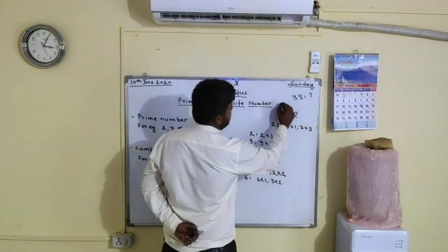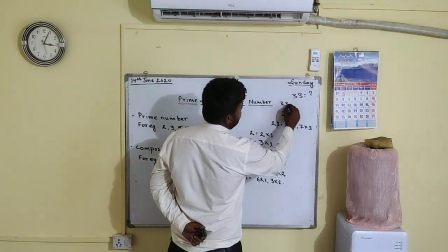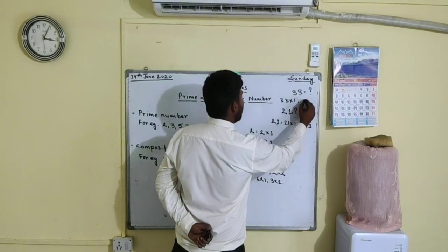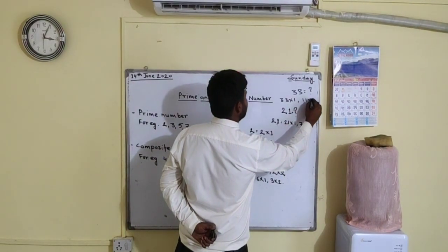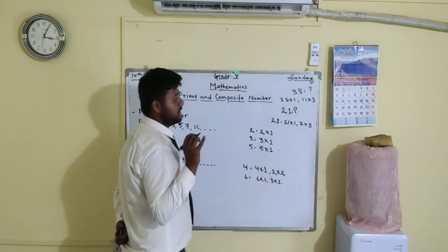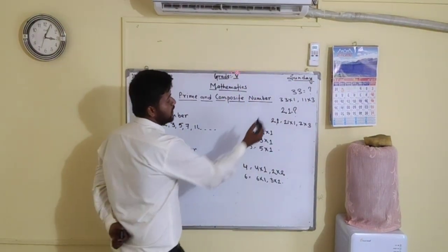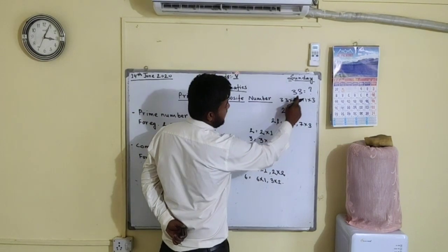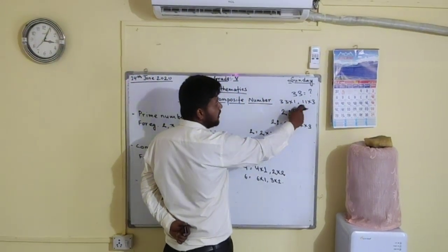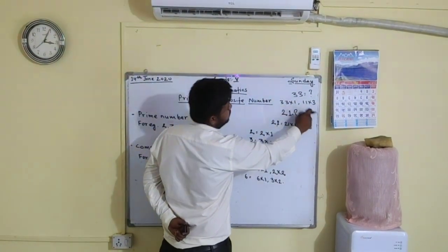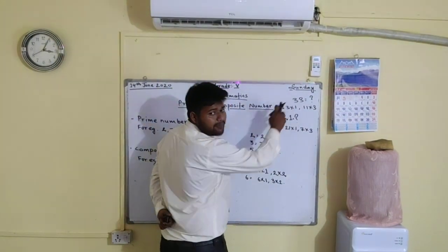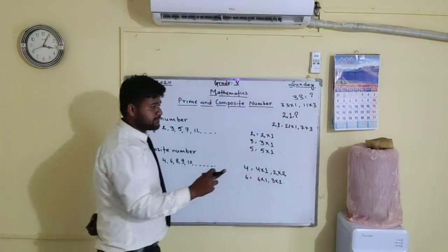Because 33 into 1 is 33, and 11 into 3 is 33. So this 33 is divided by 33 also, by 1 also, by 11 also, and by 3 also. So this 33 is a composite number.